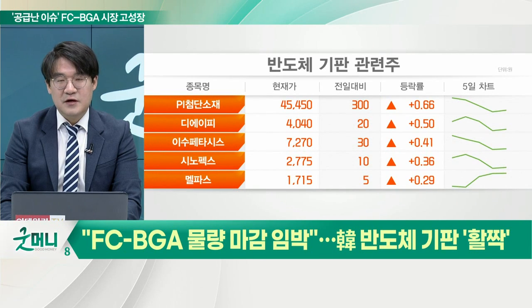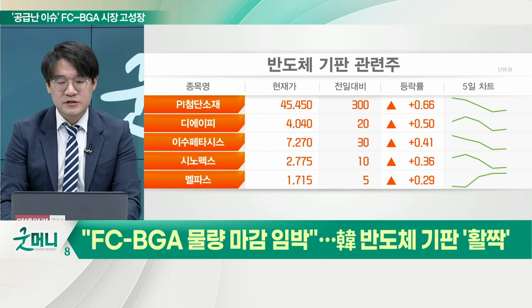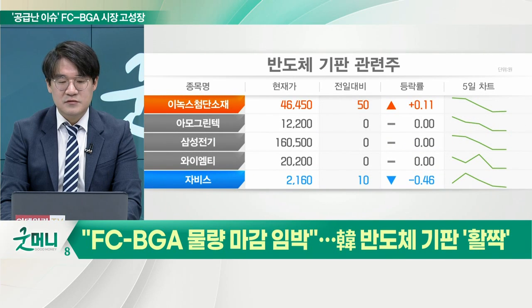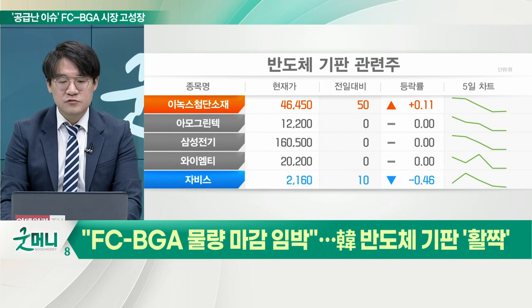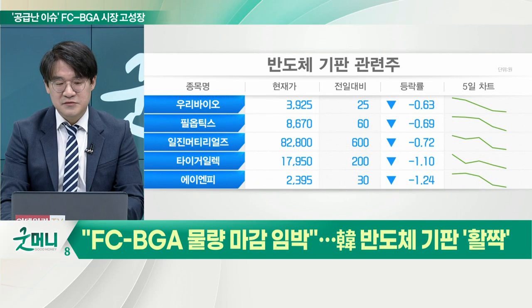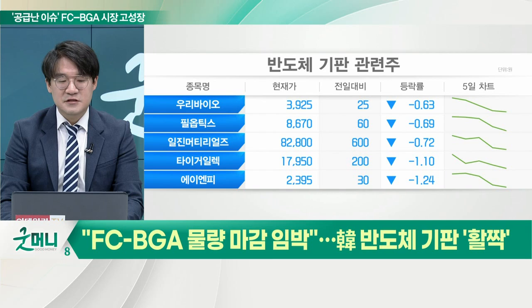그런데 최근에 완전히 바뀌었다고 합니다. Apple하고 AMD, 삼성전자 이런 회사들이 기판 회사를 직접 찾아다니면서 '어디 기판 좀 구할 수 없겠느냐, 만약에 물량이 있다면 지금 남은 거를 다 장기 공급 계약을 하자' 이런 식으로 현금 보따리를 들고 다니고 있다고 하죠. 그래서 밸류체인에서는 을의 입장이지만 요즘에는 을과 갑이 실질적으로 바뀌어 있다.